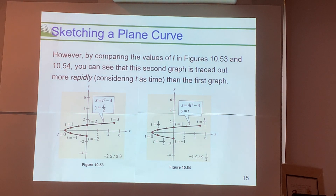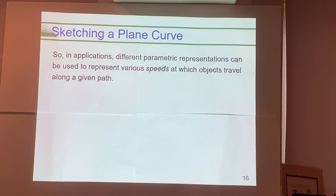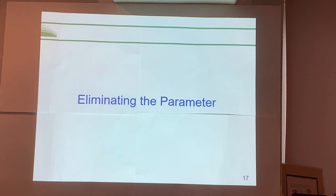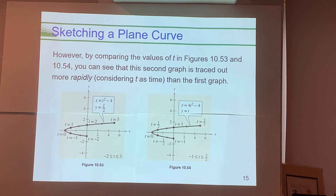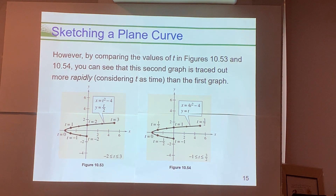Next: how can I go from a set of parametric equations and figure out the rectangular equation? That's through a process called eliminating the parameter. It makes sense: in a rectangular equation you don't have a parameter, so we need to eliminate it — this can also help verify that two sets of parametric equations produce the same curve.